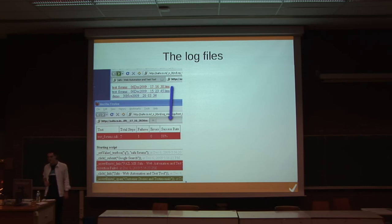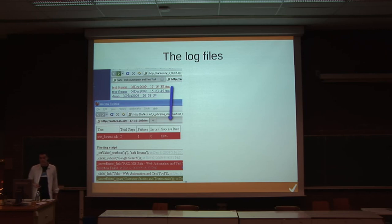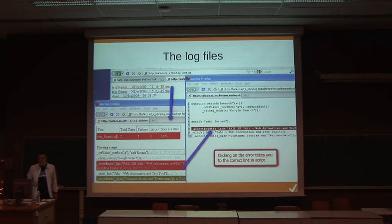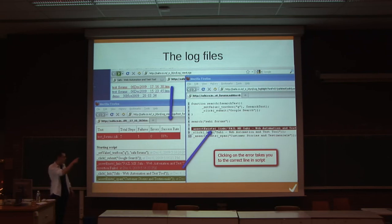Asserts — like is the element there, is the element visible, is the text right — are marked in green and red. Other failures that can happen, like server timeouts or bad connections, are shown in yellow. And with just one click on any failed step, you get directed to the script and you see the line highlighted where the failure happened.